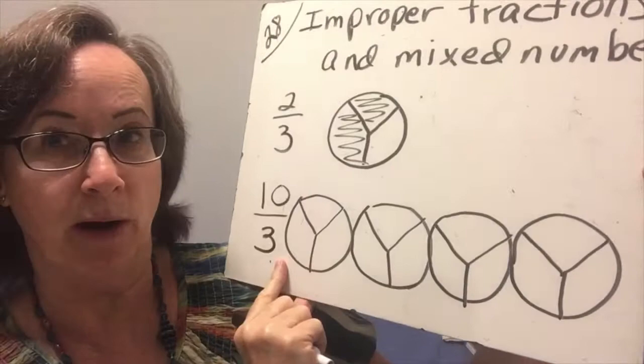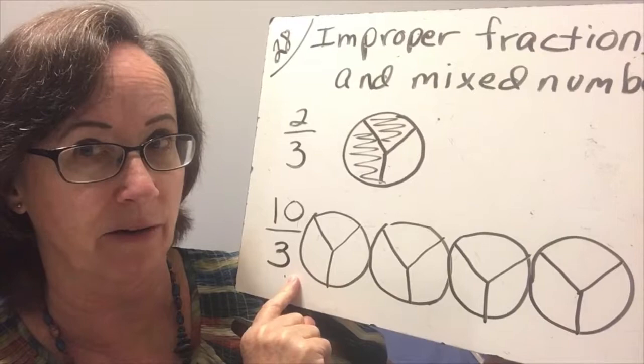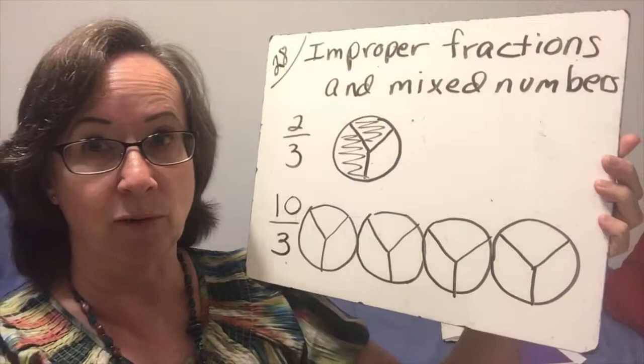An improper fraction is when the numerator, 10, is greater than the denominator, 3. So 10 thirds means that I've actually got more than one whole, right?